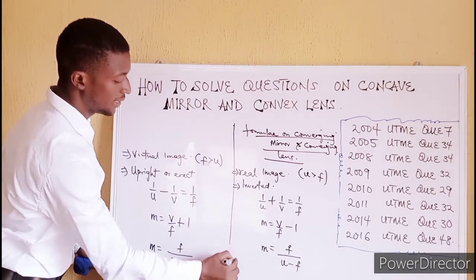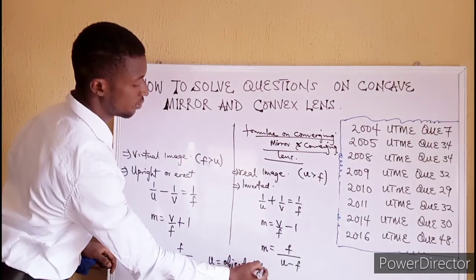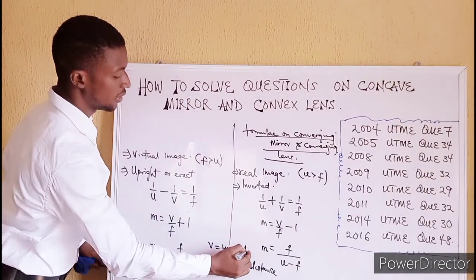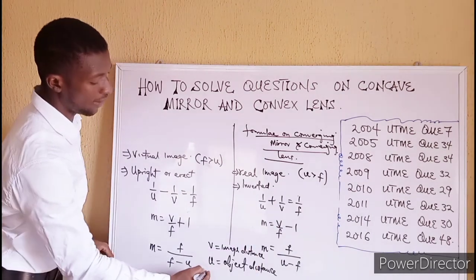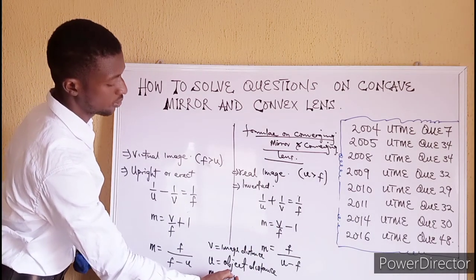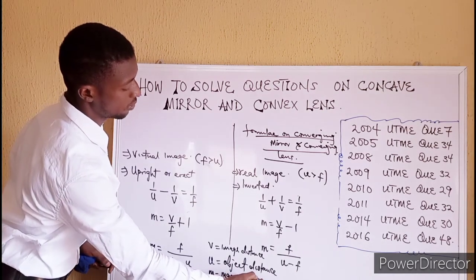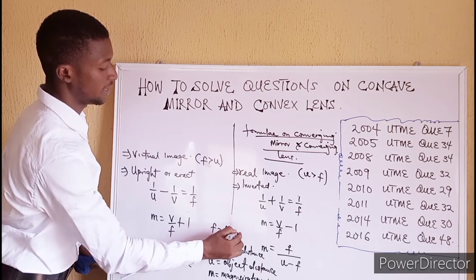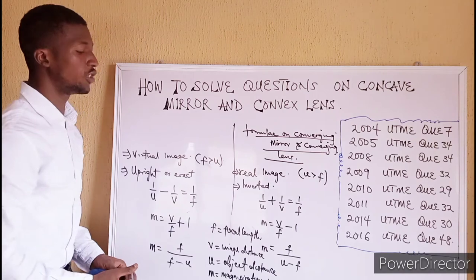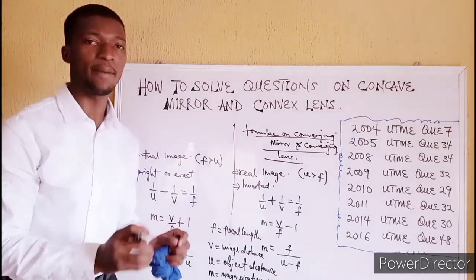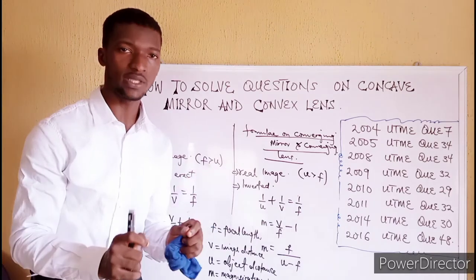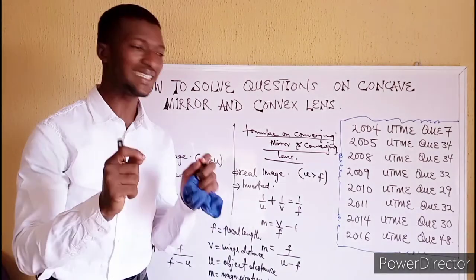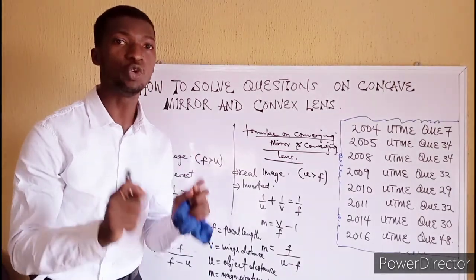Please do not forget: U is your object distance, V is your image distance, M is your magnification, and F is your focal length. So depending on what you are looking for and what type of image is formed, be specific. When you know the type of image that is formed, you can determine very easily which formula to use.